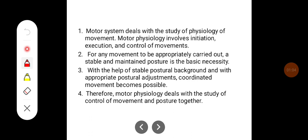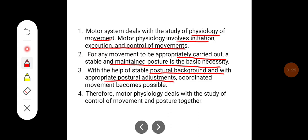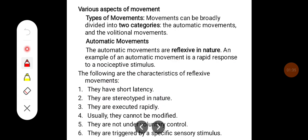The motor system deals with the study of the physiology of movement. Motor physiology involves initiation, execution, and control of movements. For any movement to be appropriately carried out, a stable and maintained posture is the basic necessity. With a stable postural background and appropriate postural adjustments, coordinated movement becomes possible. Therefore, motor physiology deals with the study of control of movement and posture together.